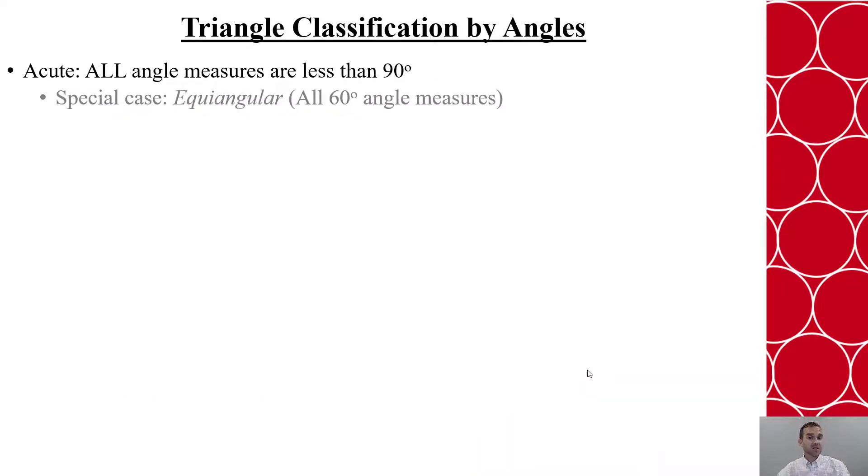When we classify triangles, we'll classify them by angles as well as by sides. Within the angles, we have the acute classification where all angle measures are less than 90 degrees, with a very special case of the equiangular triangle. And that's when all angle measures are 60 degrees.